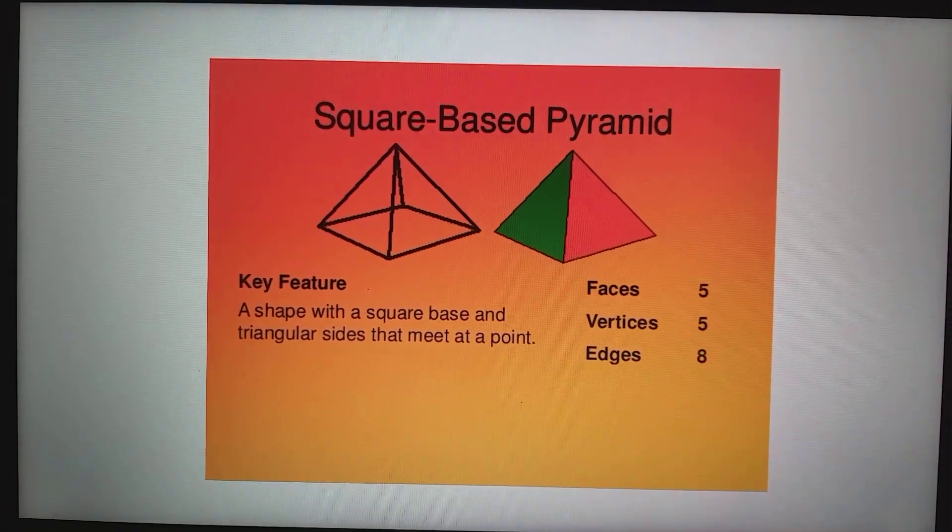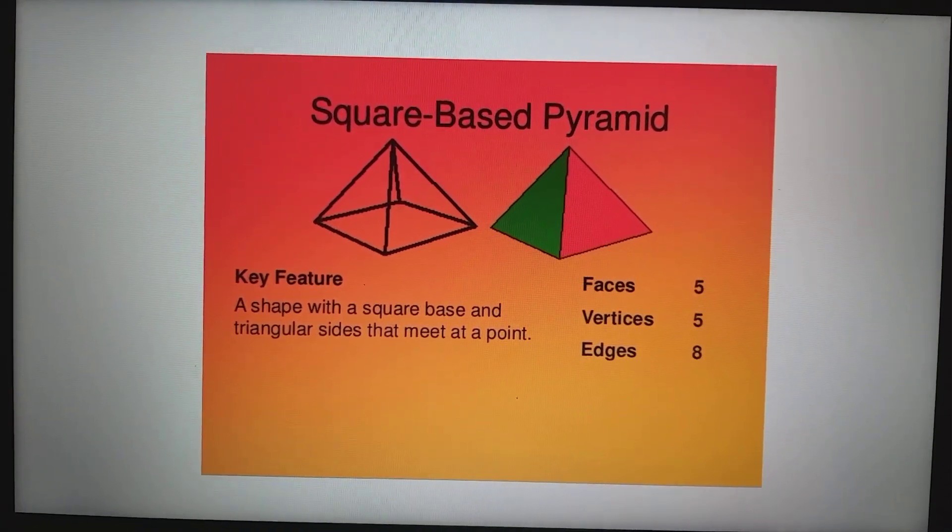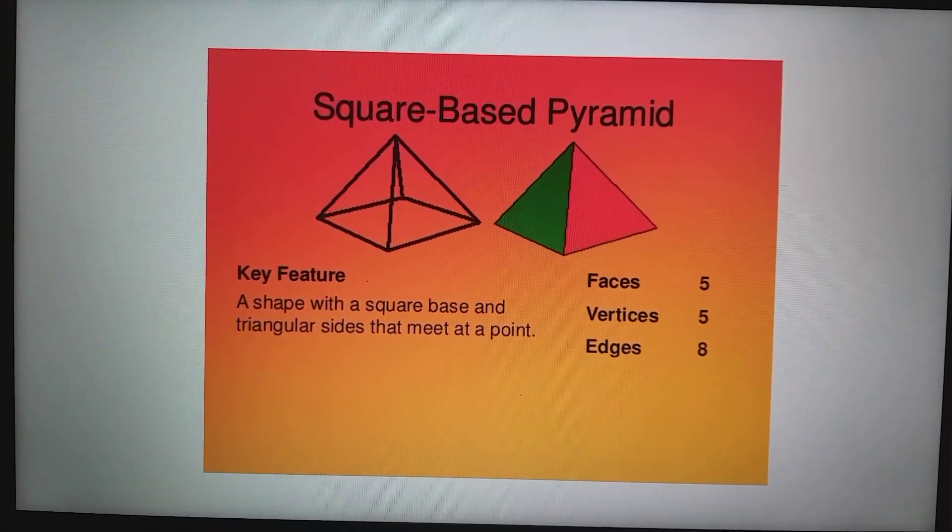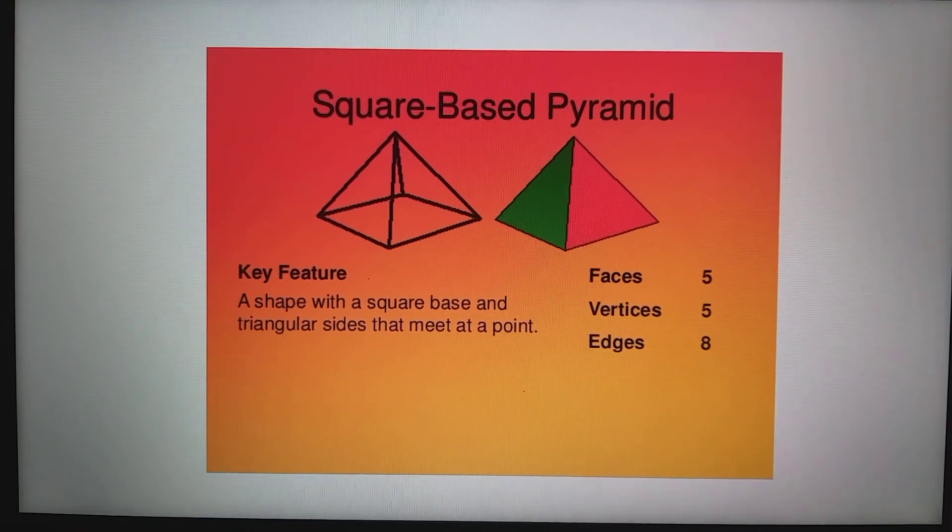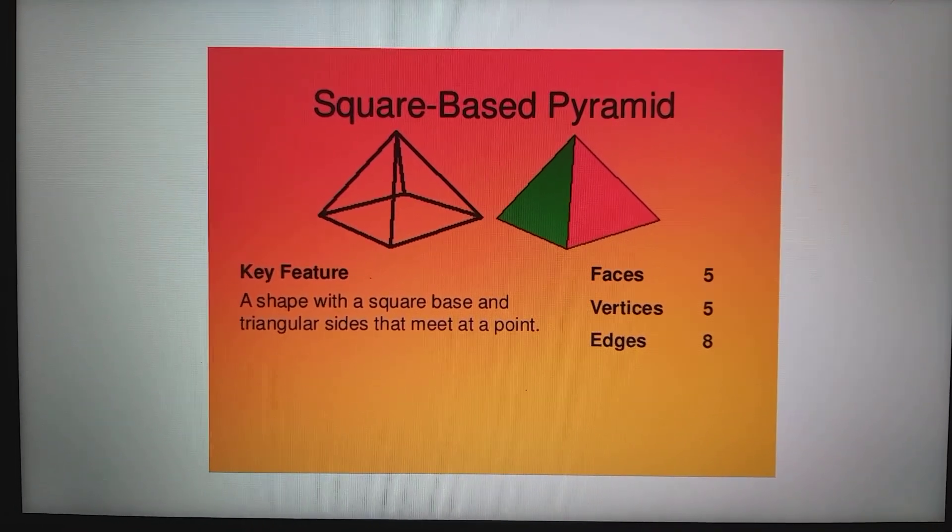The next solid is called a square base pyramid. Why do we call it a square base pyramid? That's because the bottom of this solid is a square.